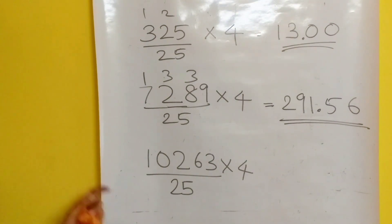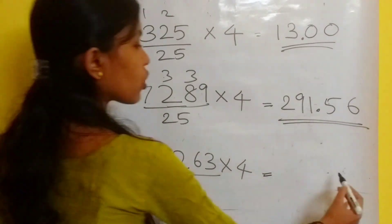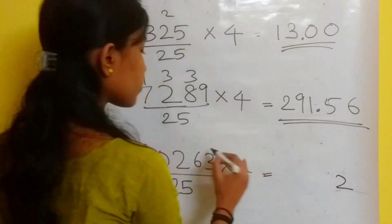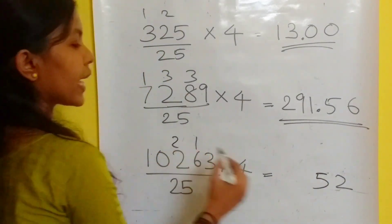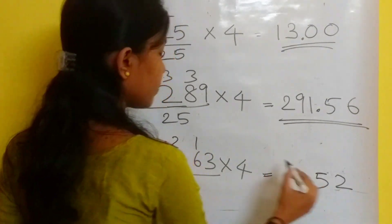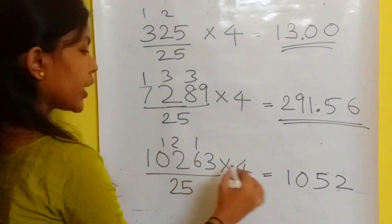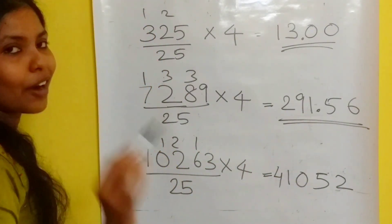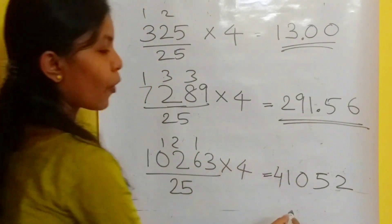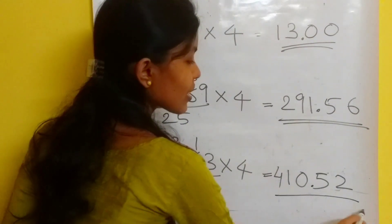Now let's move to the third example, a 5-digit number. Again, multiply by 4: 3 into 4 is 12, 6 into 4 is 24 plus 1 is 25, 2 into 4 is 8 then 9 then 10, 0 into 4 is 0 plus 1 is 1, 1 into 4 is 4. You should have two digits after the decimal point — this is the answer.